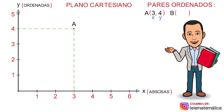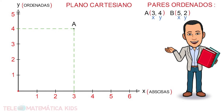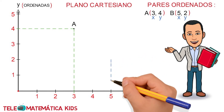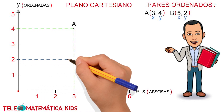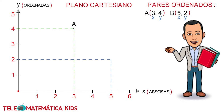Siguiente punto, de coordenadas (5, 2). Identificaremos el primer valor con la letra X, que corresponde al eje de las abscisas, y el segundo valor con la letra Y, que corresponde al eje de las ordenadas. Luego, trazamos una línea discontinua perpendicular al eje X que pase por el valor 5, y trazaremos una línea discontinua perpendicular al eje Y que pase por el valor 2. En la intersección de ambas líneas se encuentra el punto identificado con la letra B.